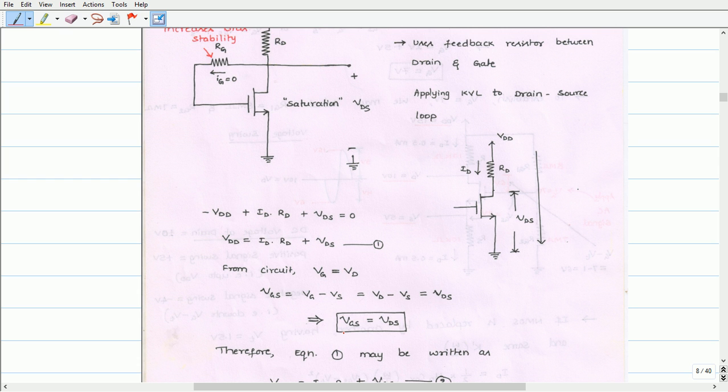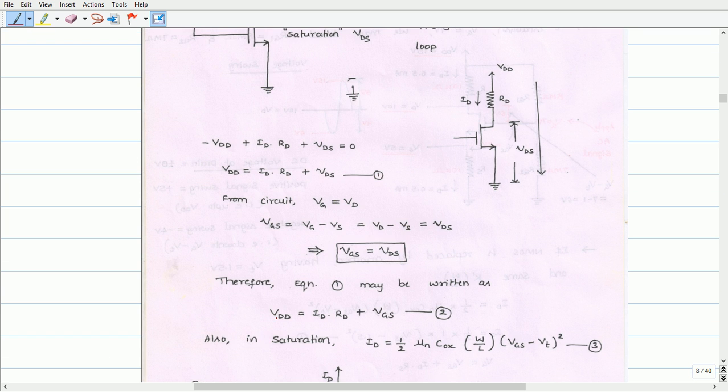From the circuit we know that gate voltage is equal to drain voltage, that is VG equals VD. Therefore VGS equals VG minus VS. We can substitute VG as VD. Therefore VGS equals VD minus VS which is also equivalent to VDS. Therefore equation 1 can be rewritten as VDD equals ID·RD plus VGS.